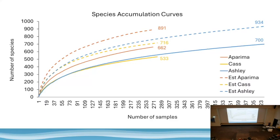I threw in a species accumulation curve to highlight that point. The number of samples along the bottom and the number of species you count — for the three rivers in solid lines, the more samples added, the more things you catch. Those curves are miles away from being flat; we could keep sampling forever and still not see every single species. But I think you get most of them in the first 50 to 100 samples — a good chunk of biodiversity. The dotted lines show predicted numbers using models: the Cass goes from 533 observed to maybe 716 species predicted if we did all that extra sampling.